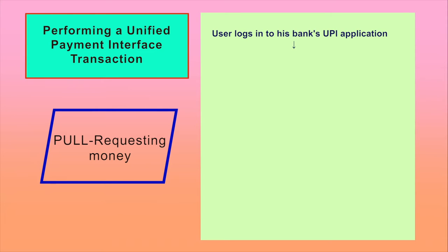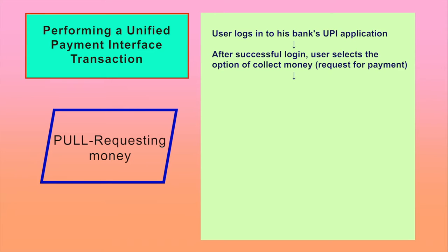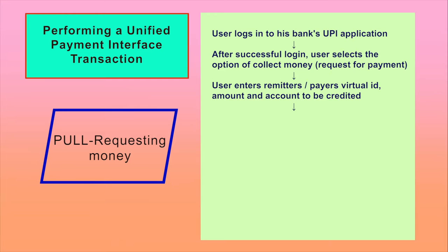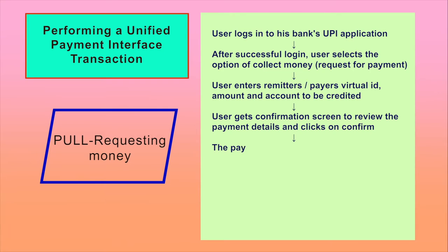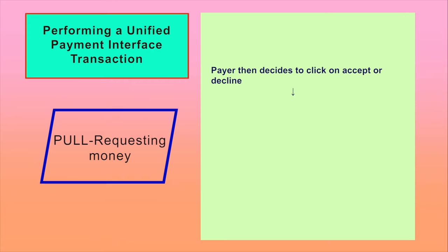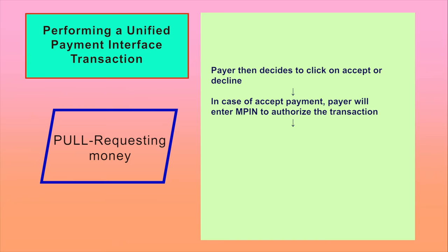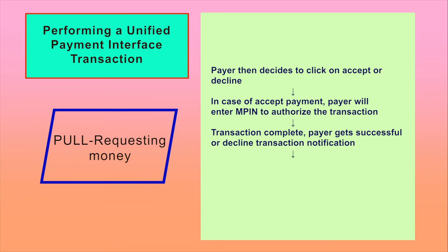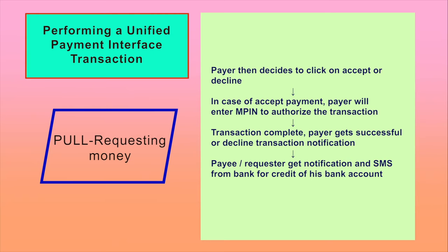Pull — requesting money: The user logs into his bank's UPI application. After successful login, the user selects the option of collect money or request for payment, enters the remitter's or payer's virtual ID, amount, and account to be credited. The user gets a confirmation screen and clicks on confirm. The payer receives a notification on his mobile for the money request, opens his bank UPI app, reviews the payment request, and decides to accept or decline. In case of acceptance, the payer enters the MPIN to authorize the transaction. Both the payer and payee receive successful or decline transaction notifications, and the payee receives an SMS from the bank for credit to their bank account.